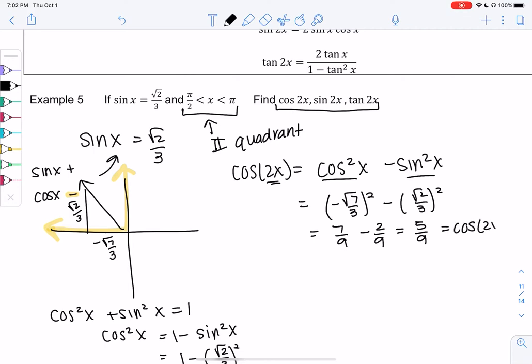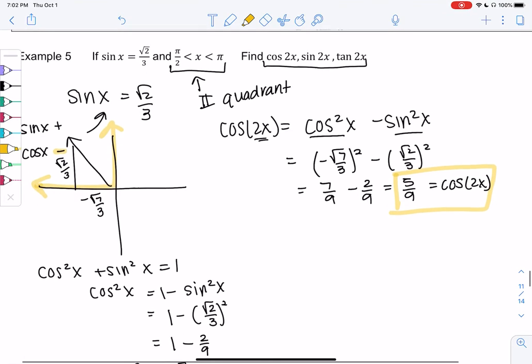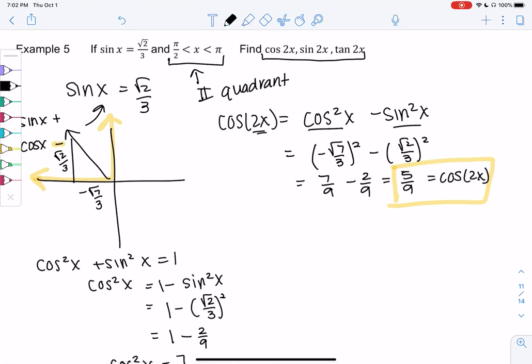So cosine of 2x is 5 over 9. I don't really know what 2x is. I just know that the cosine of it is 5 over 9, and this just happens in calculus sometimes, so we're just practicing skills.